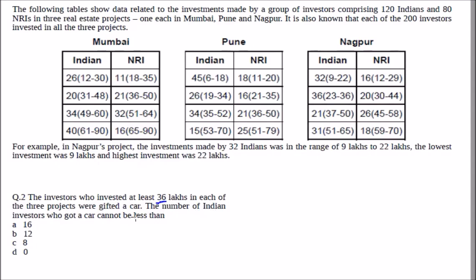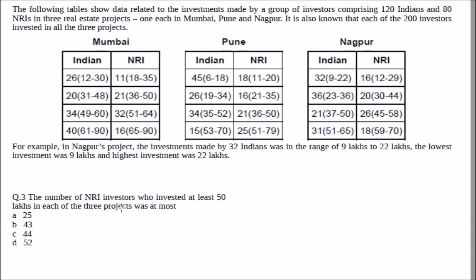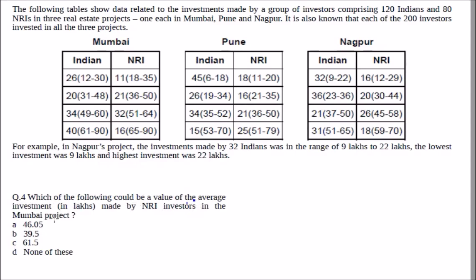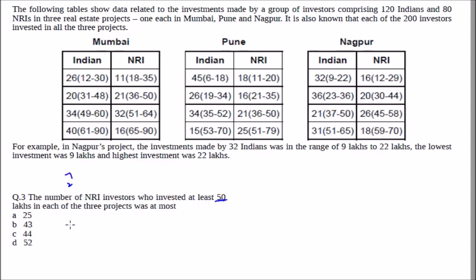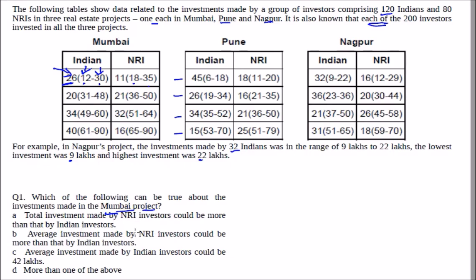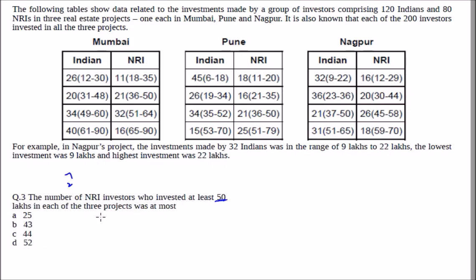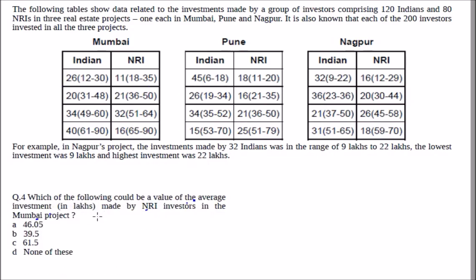Question 1 asks which of the following can be true about the investments made in the Mumbai project — specifically about total and average investment by NRIs. Question 2: investors who invested at least 36 lakhs in each of the three projects were gifted a car — the number who got a car cannot be less than how much? Question 3: the number of NRI investors who invested at least 50 lakhs in each of the three projects was at most. Question 4: which of the following could be the value of the average investment made by NRI investors in Mumbai. Since Q1 and Q4 share similar calculations and Q2 and Q3 are individual, the order should be Q2 and Q3 first, then Q1 and Q4.